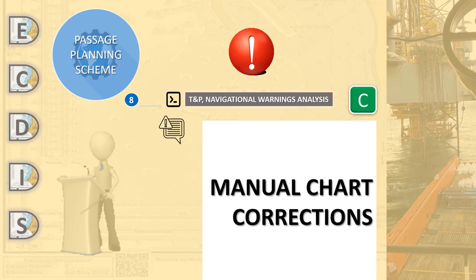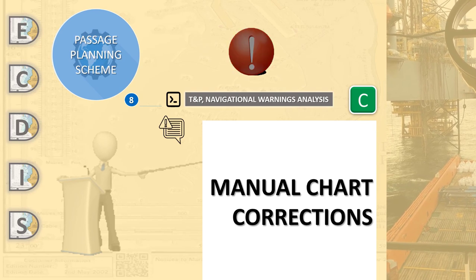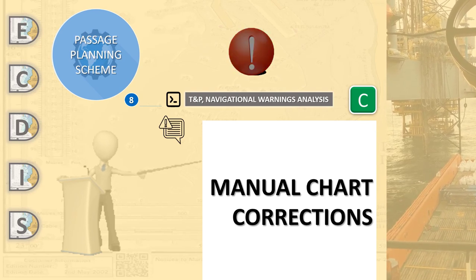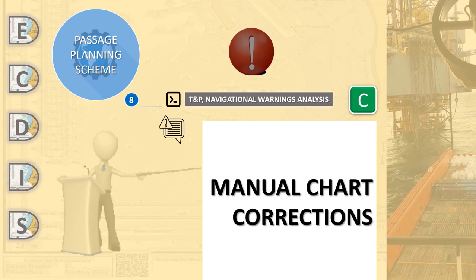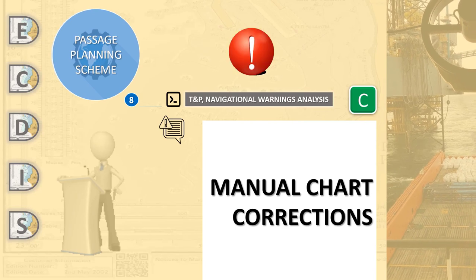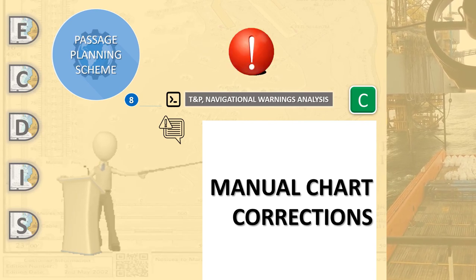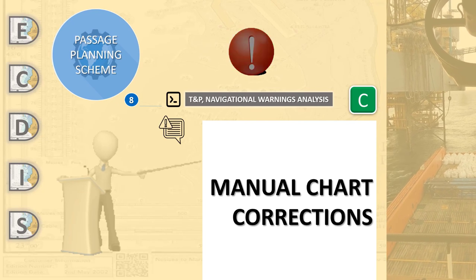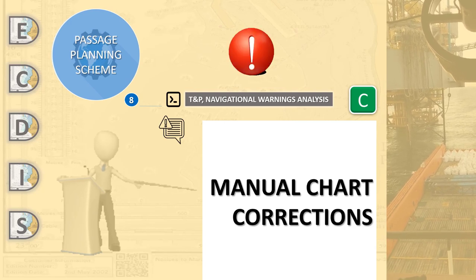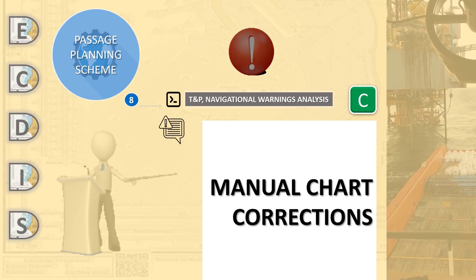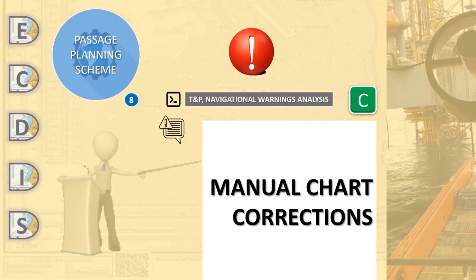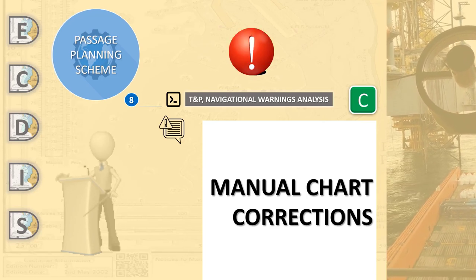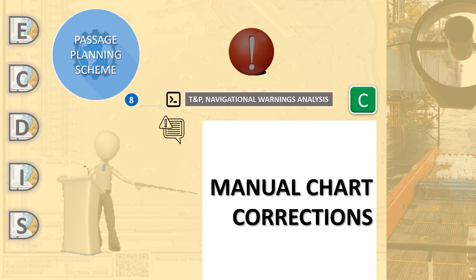Manual corrections should be used to insert chart corrections — this could be navigational warnings received by Navtex or SafetyNet of a permanent nature. On many Aegis models, it is possible to set an expiry date for objects in case they are of a temporary or preliminary nature. Voyage-related information should not be inserted as a manual chart correction, as this function relates directly to a specific chart and is not to be regarded as an optional layer. Voyage-specific information should be included as user chart objects, which can easily be arranged in various layer sets that can be activated and deactivated whenever needed.